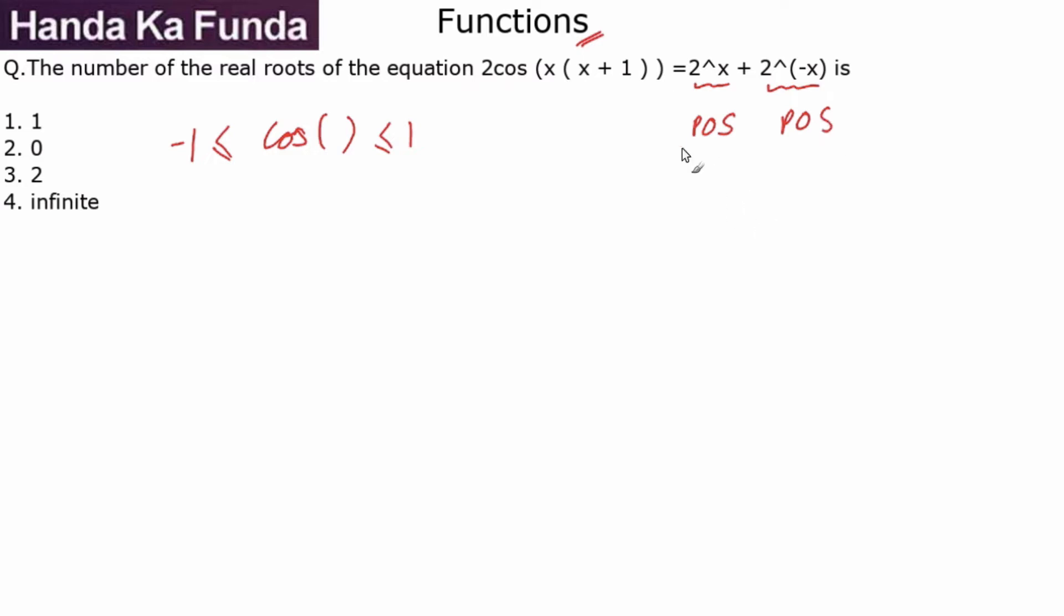This is again 2 to the power of something, so this will be a positive value. If my right hand side is positive, that means my left hand side also has to be positive.